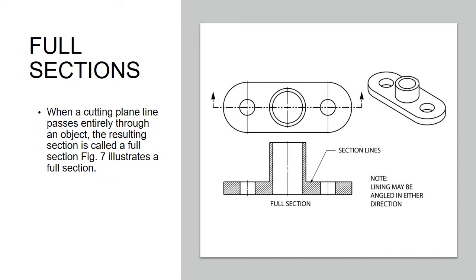Full sections. When a cutting plane line passes entirely through an object, the resulting section is called a full section. This figure illustrates a full section. You can see that they've sliced this widget, this part, end to end. So that is a full section.